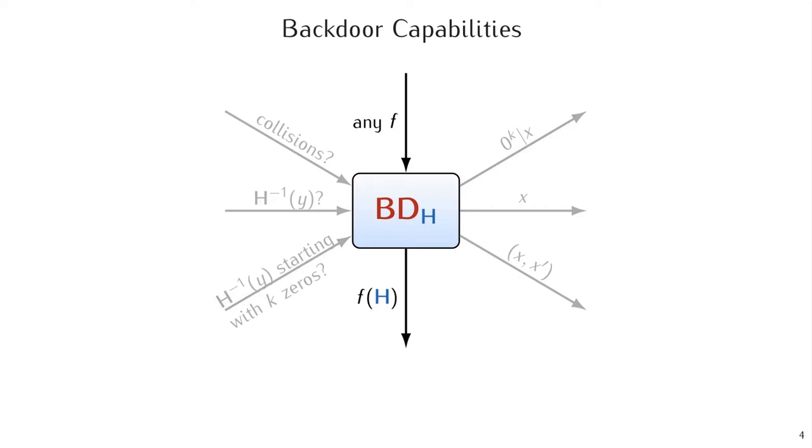But then, we have a problem on our hands, namely that no security is going to be possible if all we have is a hash function that is backdoored in such a very strong sense.